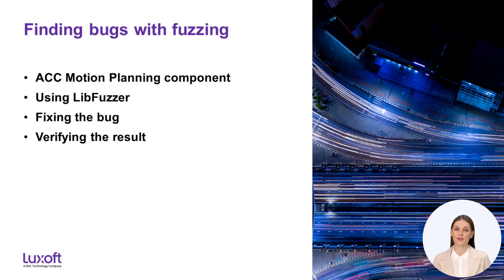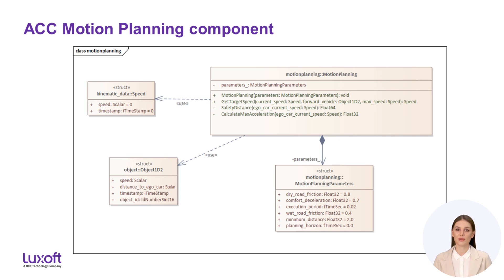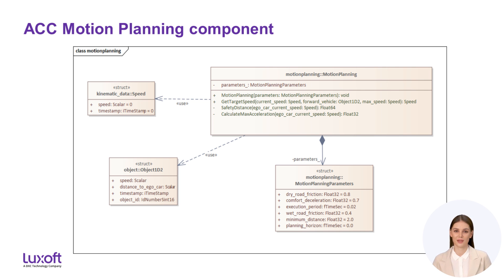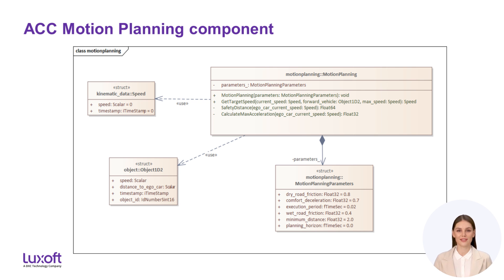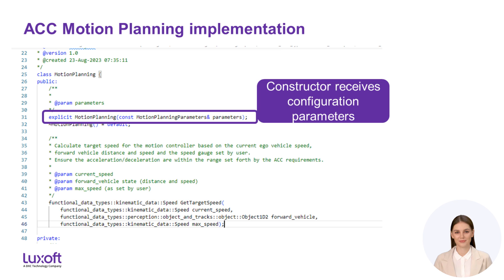And finally we will use libFuzzer to confirm that the bug is resolved. Let us have a look at the motion planning component, which is a part of the adaptive cruise control driving function. The component receives the current ego vehicle speed, speed of the forward vehicle and the distance to it, as well as the desired speed of the driver, and calculates the target speed required to maintain safe distance and comfort acceleration. It is configured with a set of parameters and then executed periodically with updated data.